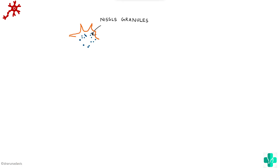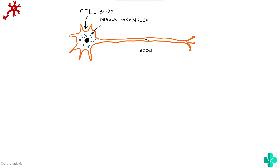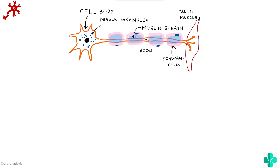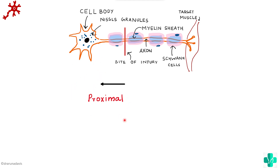The normal structure of a neuron consists of a cell body and axon surrounded by myelin sheath and Nissl granules, conducting the impulse to the target muscle. If there is an injury in between, conduction will be hampered. From the side of the injury toward the soma there will be swelling of the nucleus. In the proximal part, the nucleus will be pushed to one side and the Nissl substance will disintegrate — normally known as chromatolysis. There will also be degenerative changes in the proximal stump.